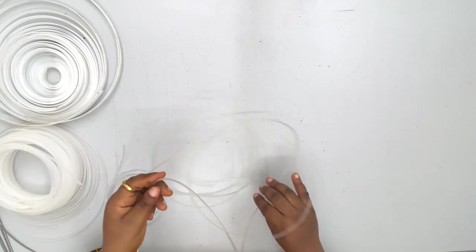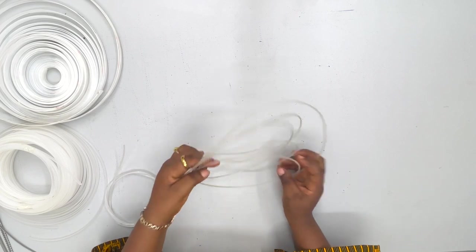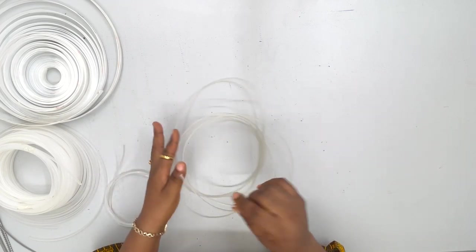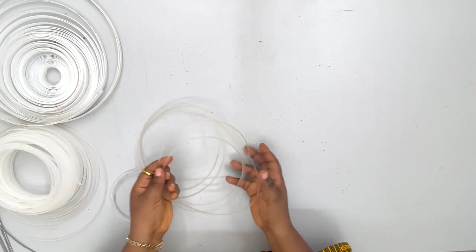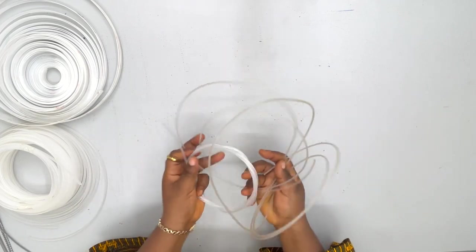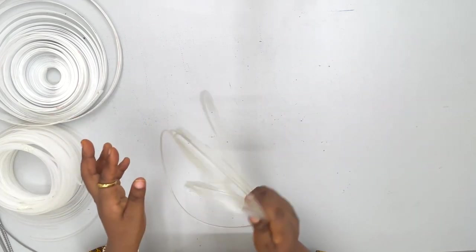It can also be fixed in overbust corset, funnel corset, any corsetry that requires precise boning structuring. You can use your round plastic bone. So yes, this is your round plastic bone.